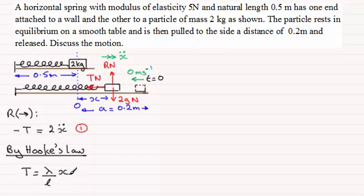So if I apply that here, we've got that the tension T equals the modulus of elasticity, which is 5 newtons, divided by the natural length, which was 0.5 meters, multiplied by the extension x. So 5 divided by 0.5 gives us 10. So we've got a tension T of 10x. And I'll label this equation number 2.